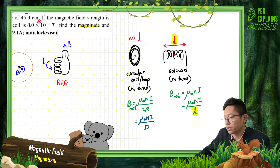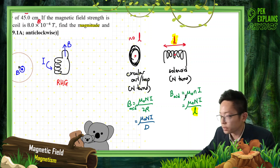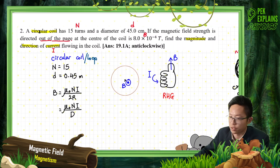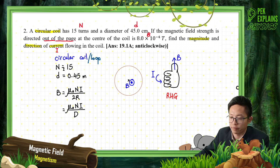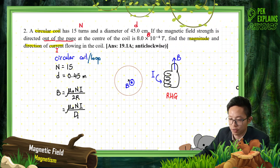So that's the difference: a circular coil with multiple turns winds up at the same place, while a solenoid has a length. They have different formulas. This question involves a circular coil, not a solenoid. N = 15 turns, diameter = 0.45 m. The magnetic field at the center is directed out of the page. We use the formula B = μ₀NI / 2r, where 2r is the diameter.